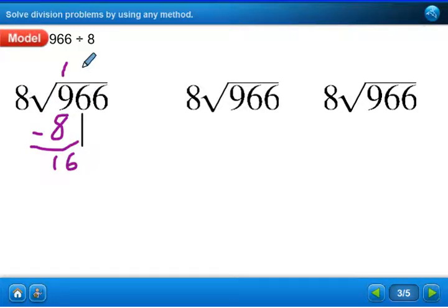And we have 16. 8 goes into 16 how many times? 2. 2 times 8 is 16. When we subtract, what do we get? We get 0. Bring down again. This time let's put an arrow on it. We bring down that 6. Now we have 6.